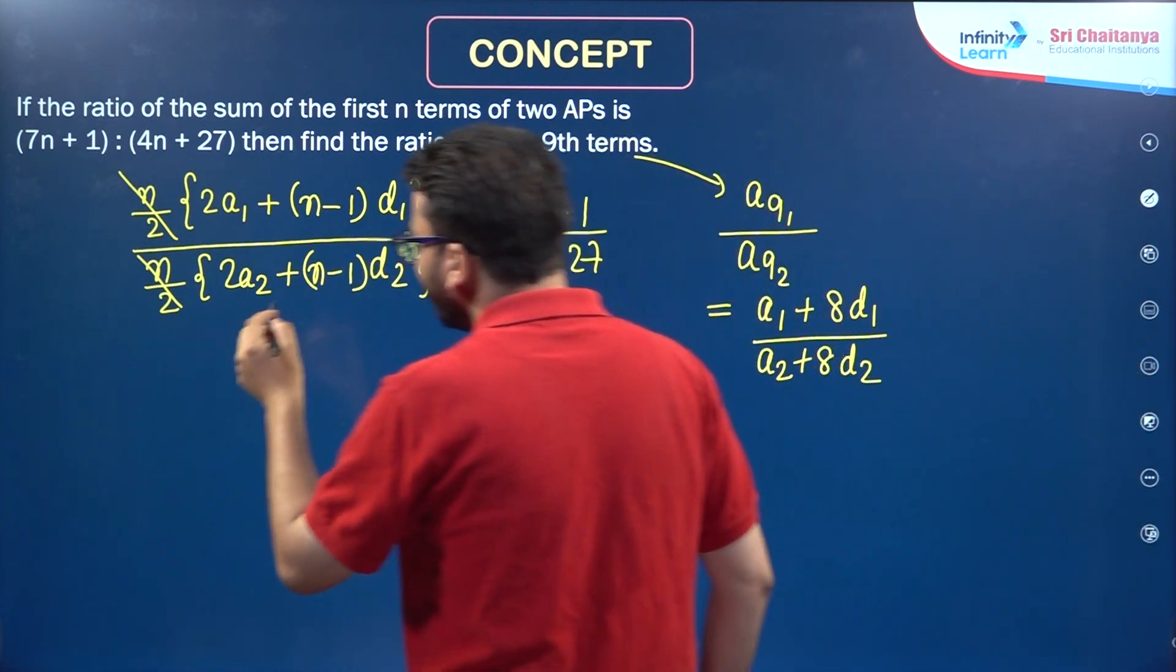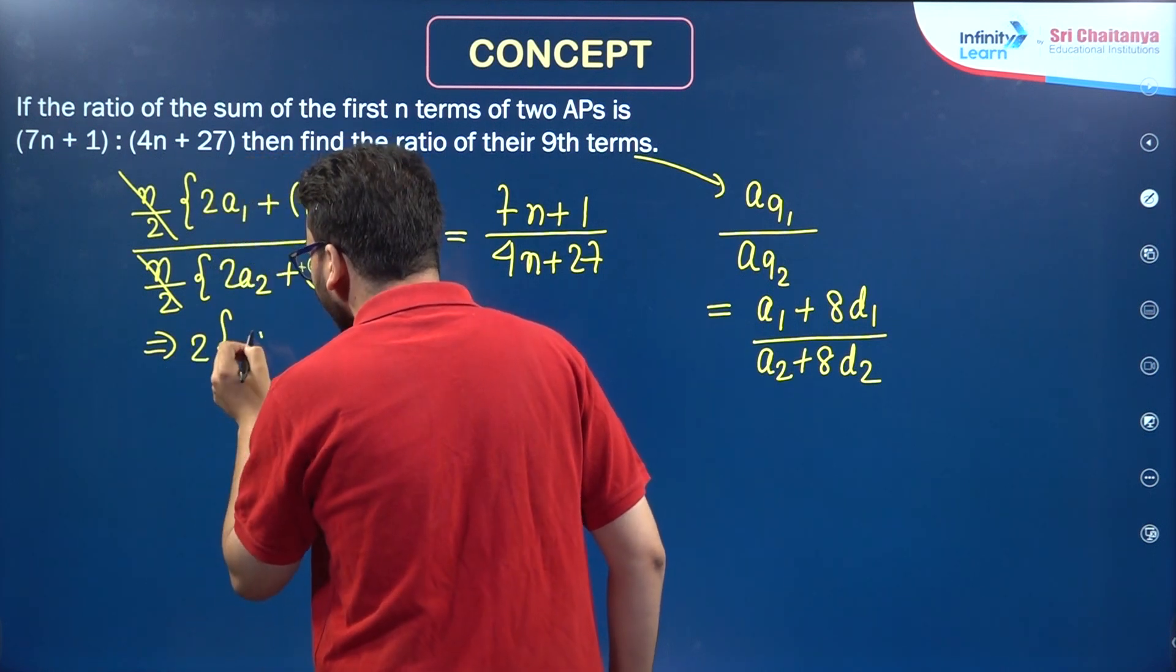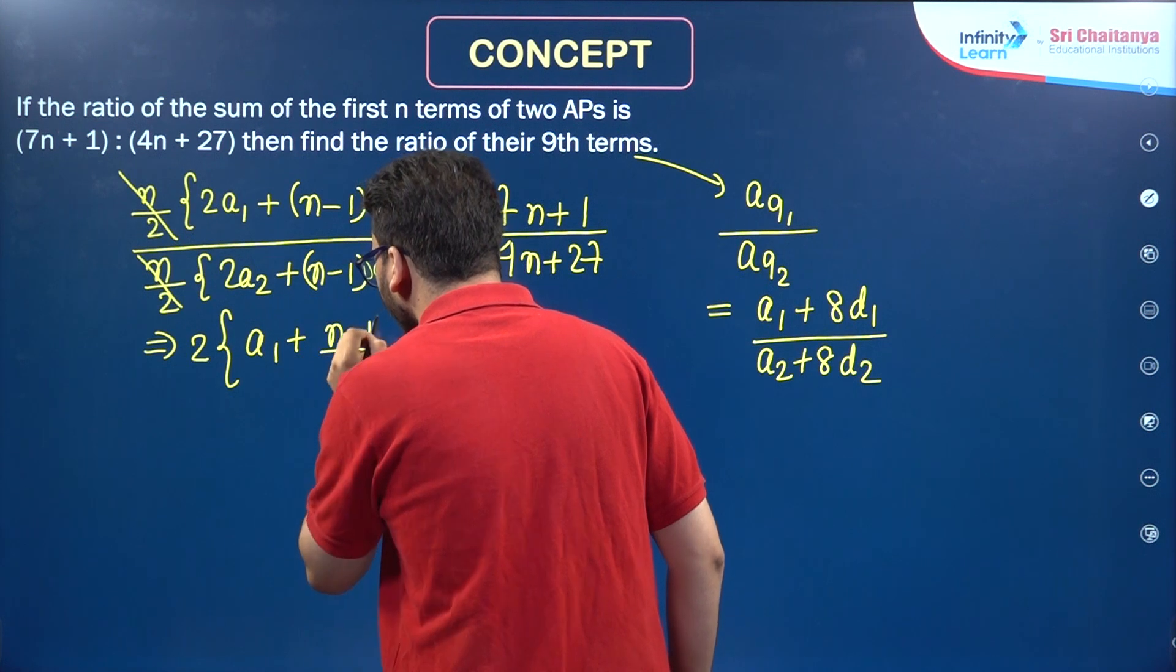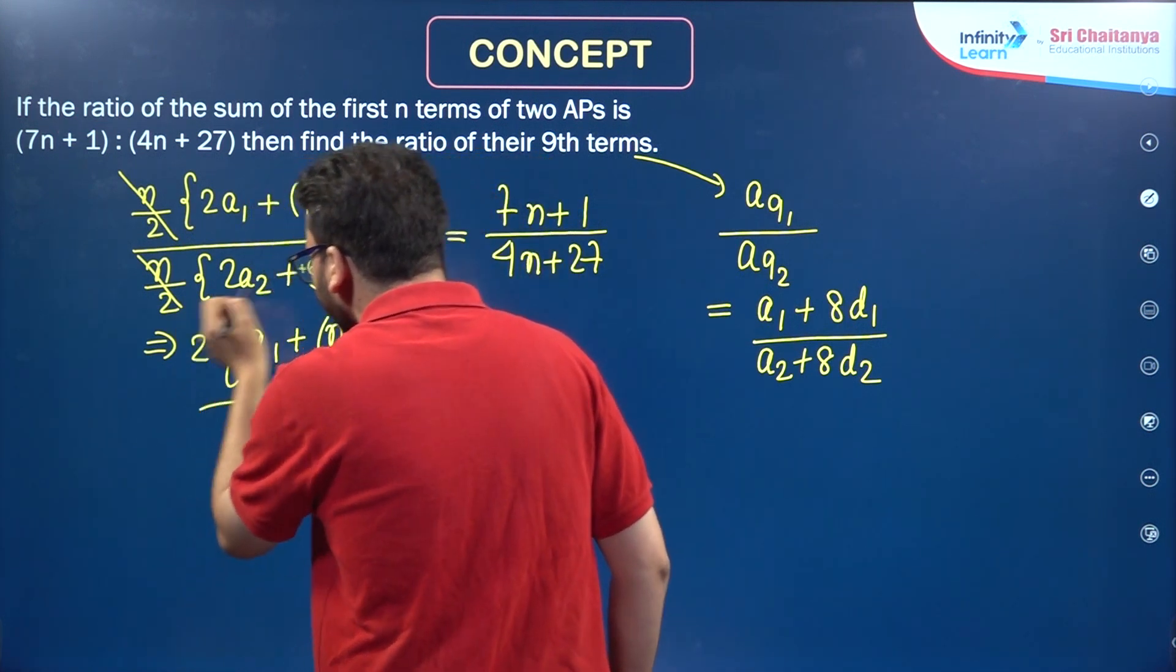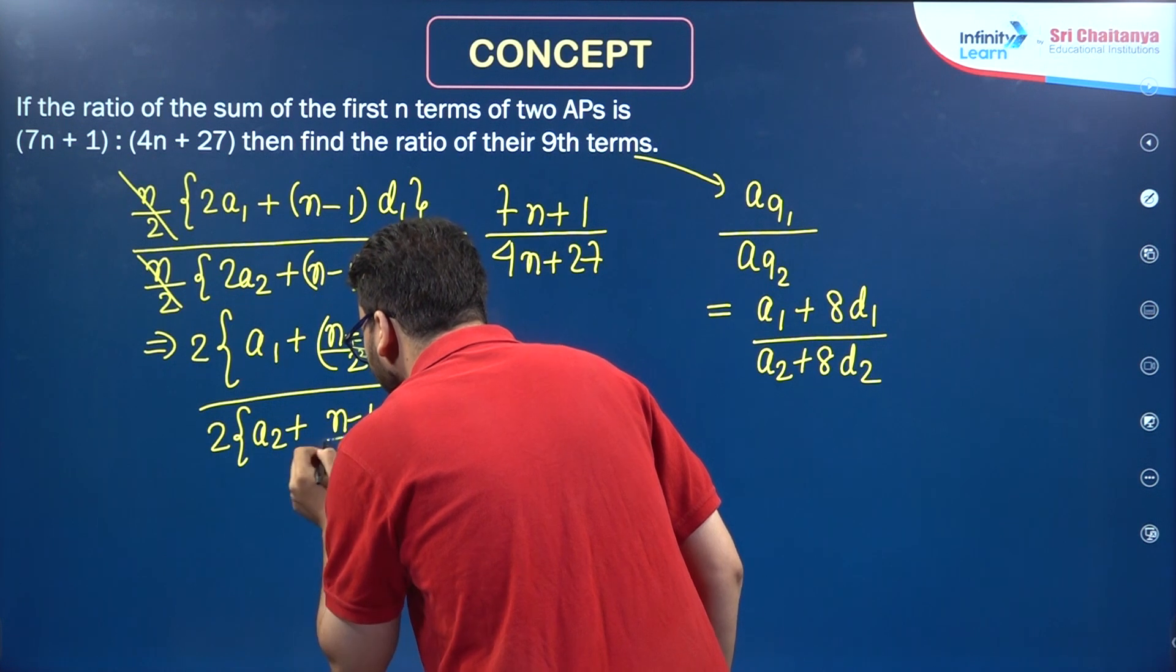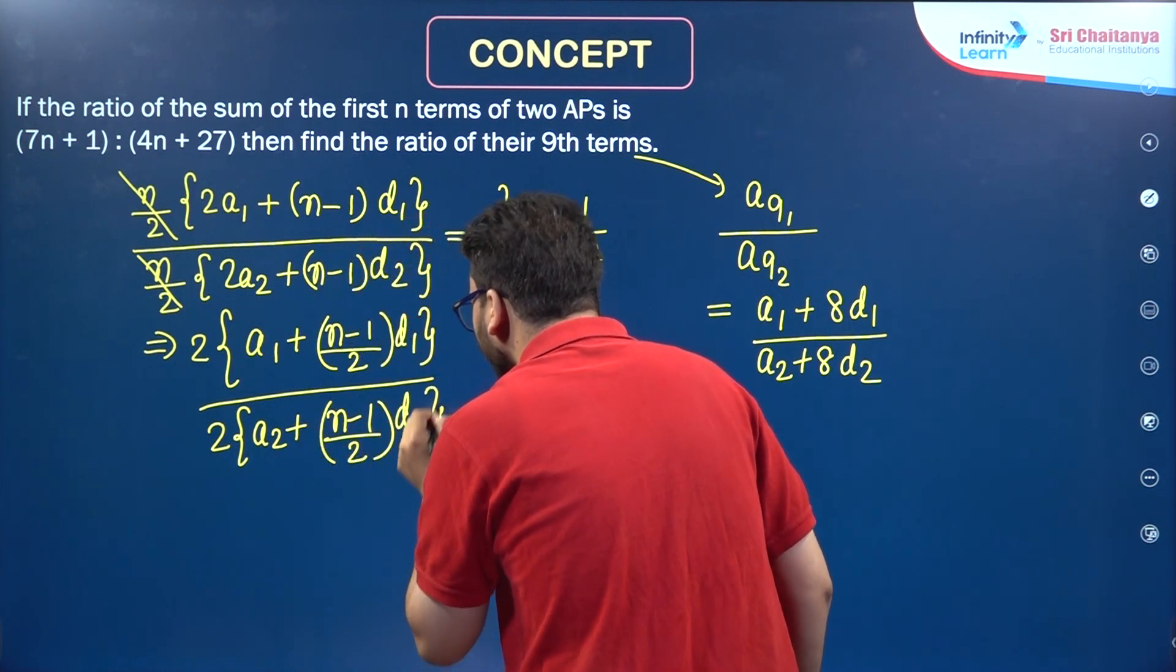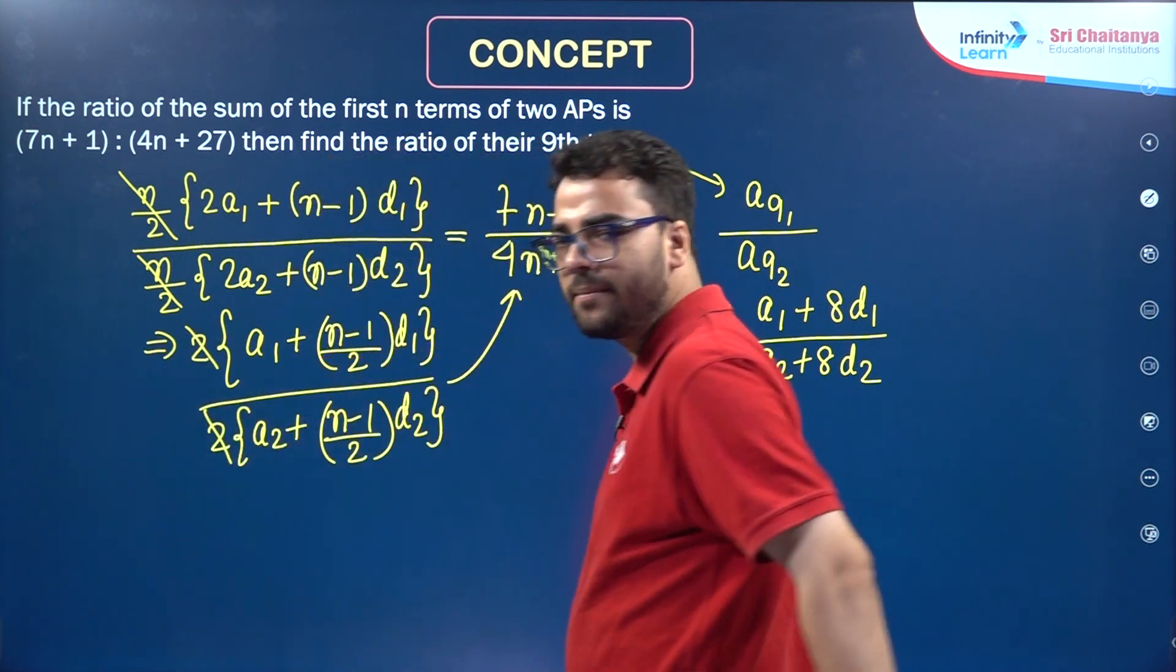For that thing, can we take 2 as common in the numerator? So, we will be left with A1 + (n-1)/2 × D1 divided by, if I take 2 as common in the denominator, A2 + (n-1)/2 × D2 and that is equal to the same thing over here. This can be cancelled out, 2 can be cancelled out.